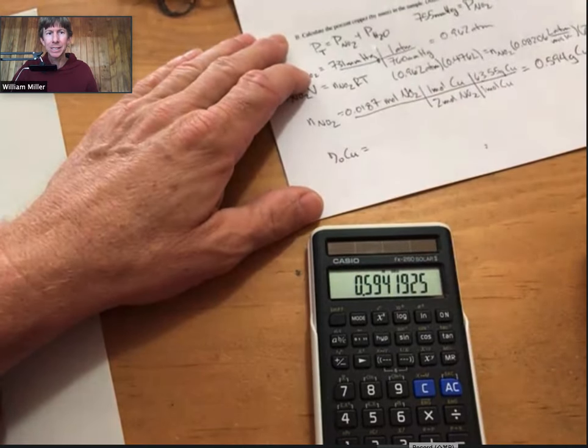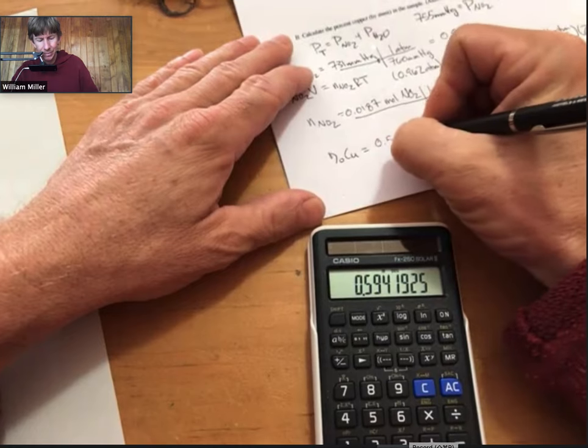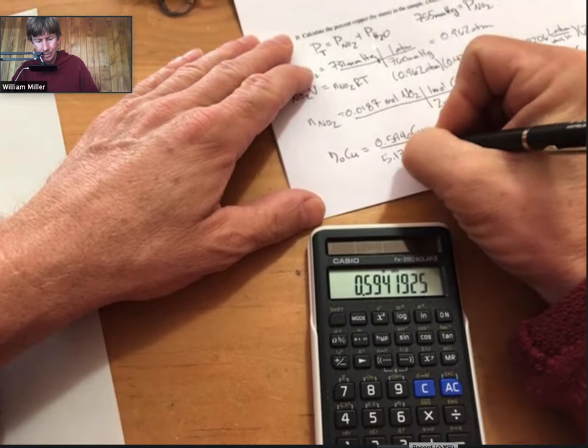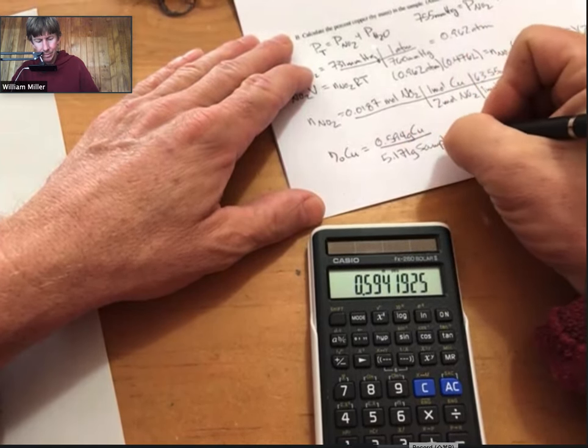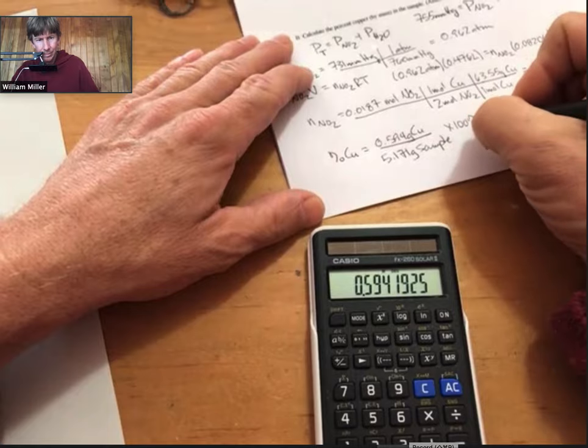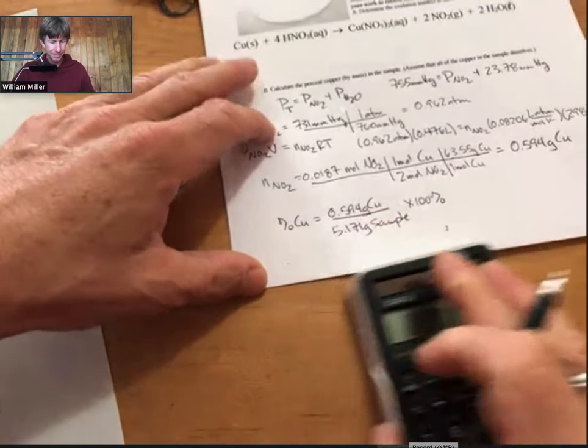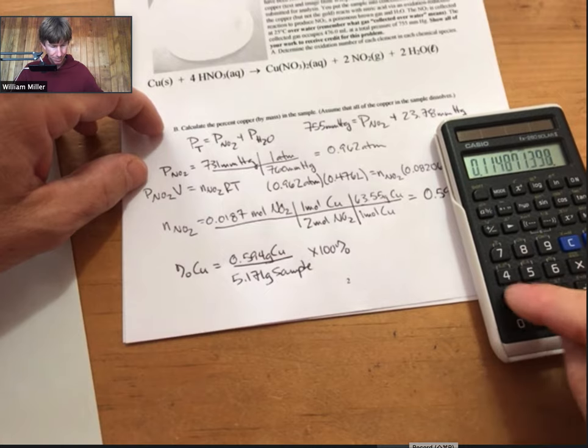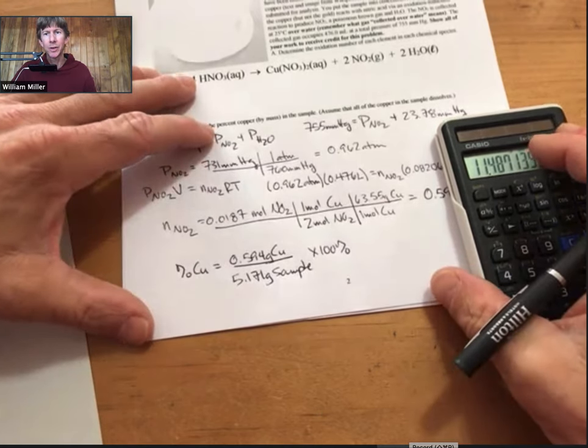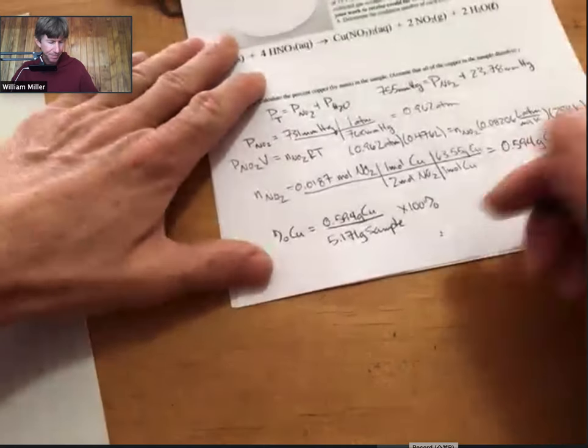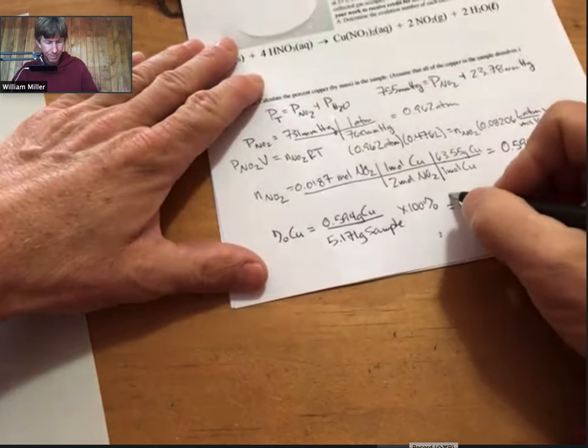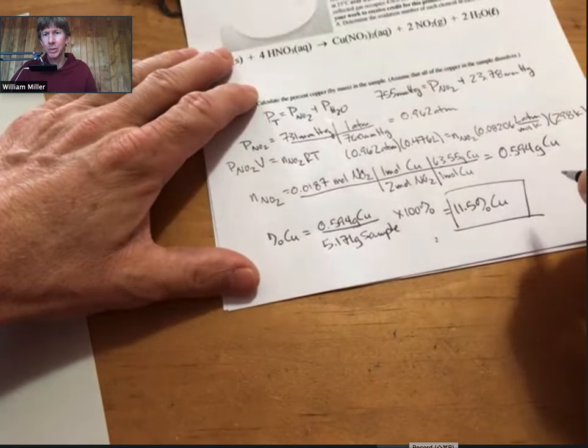Percent copper by mass is going to be grams of copper over grams of sample times 100%, for 11.5% copper, which is our final answer for 2b.